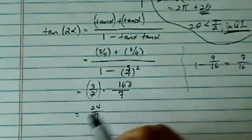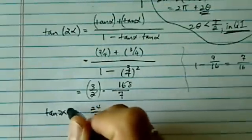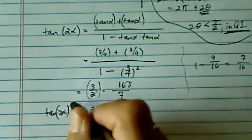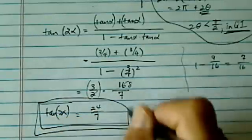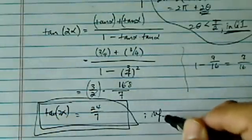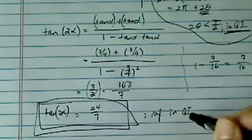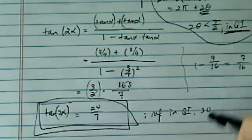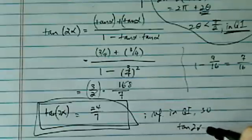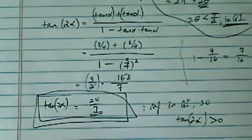Now, once again, it's important that you confirm the reference angle is in quadrant 1. The reference angle is in quadrant 1, so we know that tangent of 2 alpha is greater than 0 — it's not negative. So 24 over 7 is the final answer.